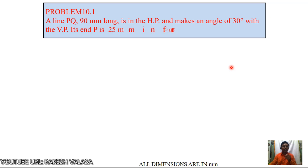Let us see problem number 10.1 in Engineering Drawing by Andibar Textbook. The given problem is: a line PQ 90mm long is in the HP and makes an angle of 30 degrees with the VP. Its end P is 25mm in front of the VP. Draw its projections.